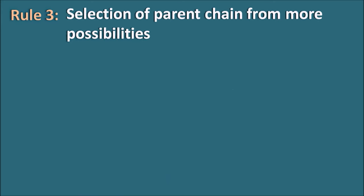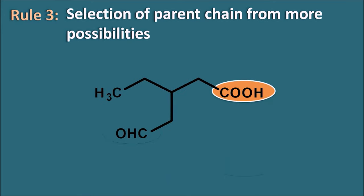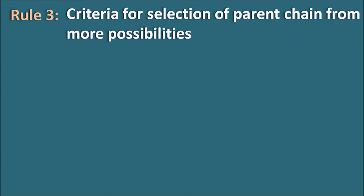Rule 3: selection of the parent chain from more possibilities. Consider a compound with carboxylic acid and aldehyde. Carboxylic acid has priority. Numbering from carboxylic acid gives a 5-carbon chain; numbering from another direction also gives 5 carbons. To choose, we follow criteria: Criteria 1 — select the longest chain with the maximum number of principal functional groups; Criteria 2 — maximum number of any functional groups; Criteria 3 — maximum number of side chains.